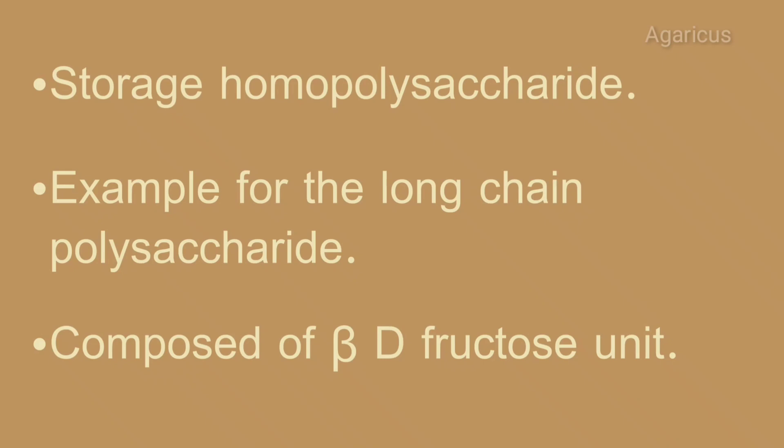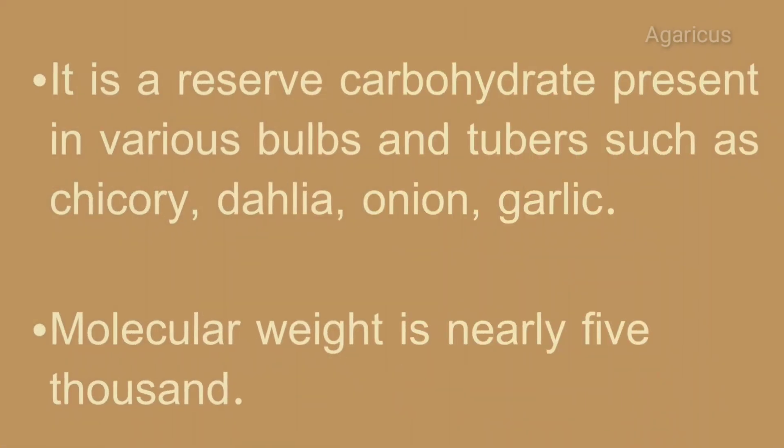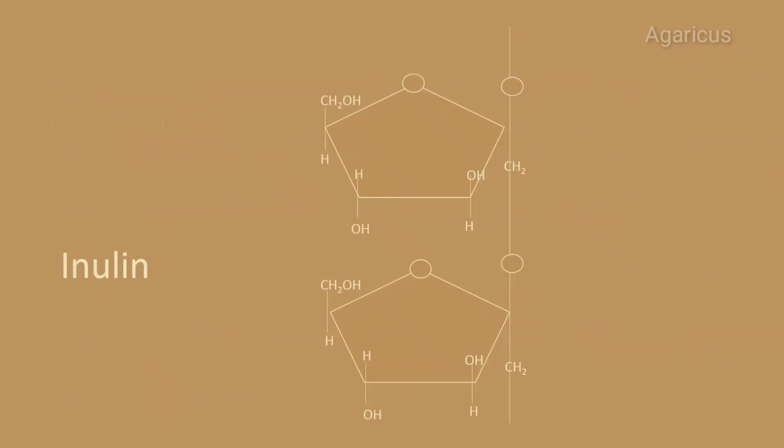Inulin is a long chain polysaccharide composed of beta-D fructose units. It is a reserve carbohydrate present in various bulbs and tubers such as chicory, dahlia, onion, and garlic. The molecular weight is nearly 5000. Here is the structure of inulin — the linkage is 1-2.